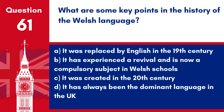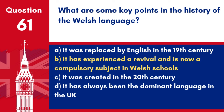Question 61. What are some key points in the history of the Welsh language? A. It was replaced by English in the 19th century. B. It has experienced a revival and is now a compulsory subject in Welsh schools. C. It was created in the 20th century. D. It has always been the dominant language in the UK. Answer: B. It has experienced a revival and is now a compulsory subject in Welsh schools. The Welsh language has seen a significant revival and it is now a compulsory subject in schools in Wales.